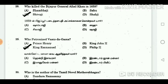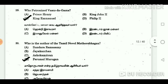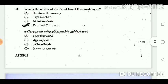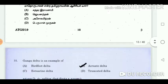Question 28: Who killed the Vijayapur General Afzal Khan in 1659? Answer: Shivaji. Question 29: Who patronized Vasco da Gama? Answer: King Emanuel. Question 30: Who is the author of the Tamil novel Mathorubagan? Answer: Perumal Murugan.